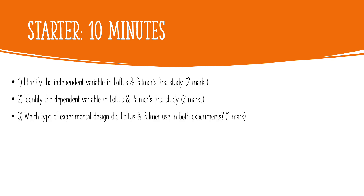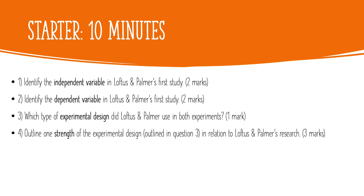Number three: which type of experimental design did Loftus and Palmer use in both experiments? Remember the way I taught you to remember this — look at the middle of the word 'experimental' and you see R-I-M: repeated, independent, or matched pairs. What was the experimental design they used, and what is one strength of that experimental design? This is a three-mark question, so make it relevant to Loftus and Palmer's research specifically.